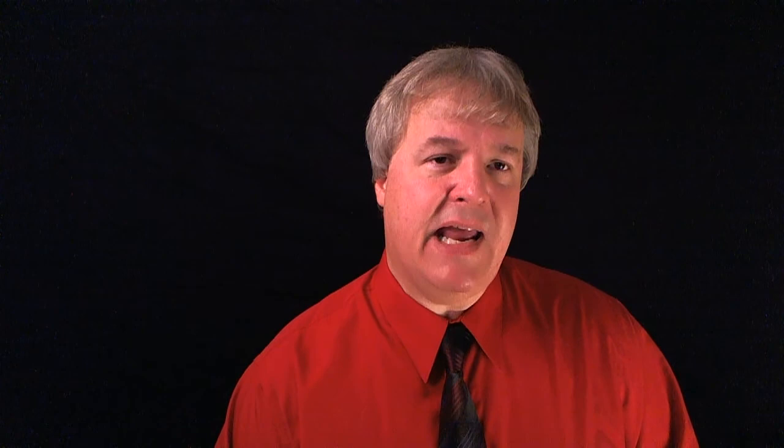When you study physics, typically each chapter of a physics book represents one of the regions of the physics maze. Sometimes a region of physics was originally figured out by one famous physicist or a group of physicists. When this happens, the region is sometimes named after the physicist. Over here, this is what the atomic physicist discovered. Isaac Newton discovered this area. Now we've entered Albert Einstein's area. The physics maze has many doors, many corridors, and many dead ends. In some cases, it could take you years to find your way down just one corridor. Let me be absolutely clear on this point: nobody has ever completely made it through the entire physics maze.